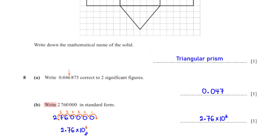Write 2,760,000 in standard form. To write this number in standard form, we move the decimal point at the end of the number to a position after the first non-zero digit, which is 2. So we have 2.76. Since we move the decimal point 6 units to the left, we multiply 2.76 by 10 raised to the power 6.